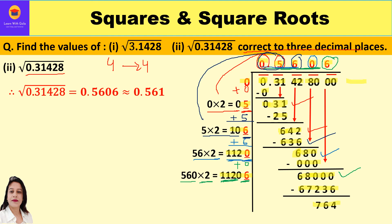We have obtained four decimal places; the square root of 0.31428 is 0.5606. They asked for the answer correct to three decimal places. The fourth decimal place is 6, which is greater than 5, so we increase the third decimal place by 1: 0 becomes 1. Therefore, the square root of 0.31428 correct to three decimal places is 0.561.